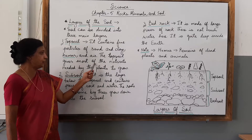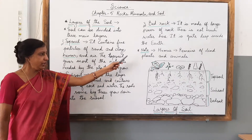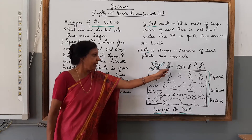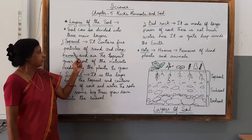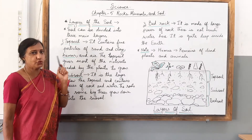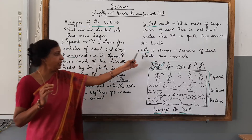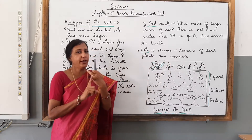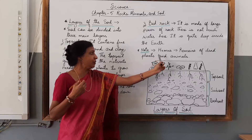The topsoil gives most of the nutrients needed by the plants to grow. Here you can see the plants are growing and getting nutrients from the topsoil. Humus means remains of dead plants and animals - do not forget, because this is a new word for you.